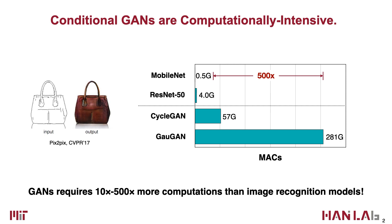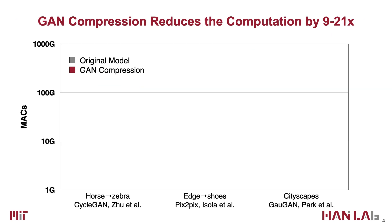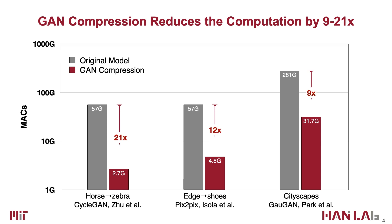To solve this problem, we propose GAN compression, a general-purpose compression framework based on distillation, channel pruning, and neural architecture search. We reduce the computation of CycleGAN, Pix2Pix, and GauGAN by between 9 and 21 times.